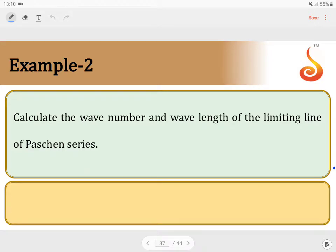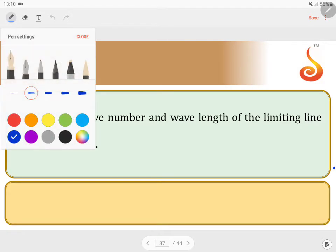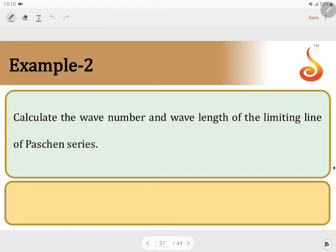Example 2. Calculate the wavenumber and wavelength of limiting line of Paschen series. This is a hint given.